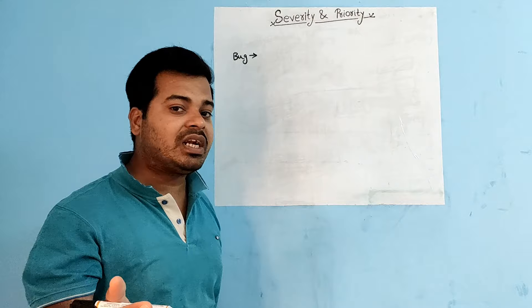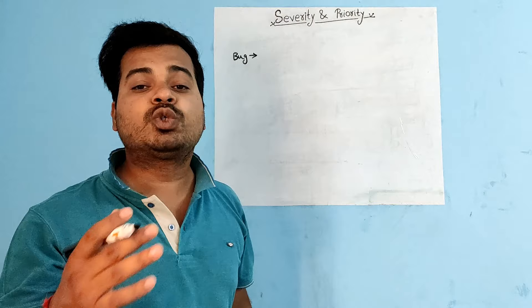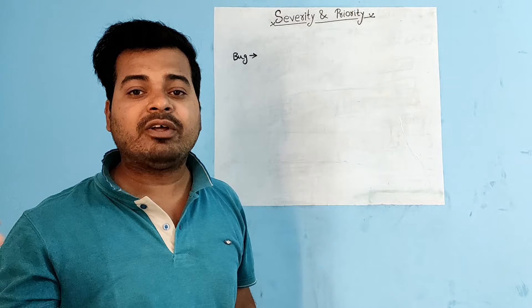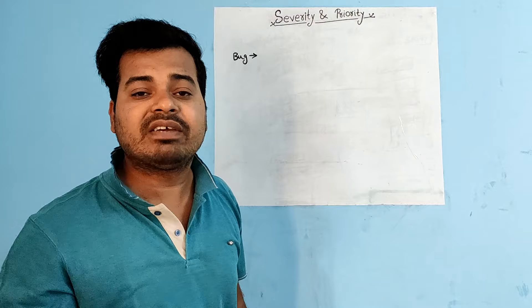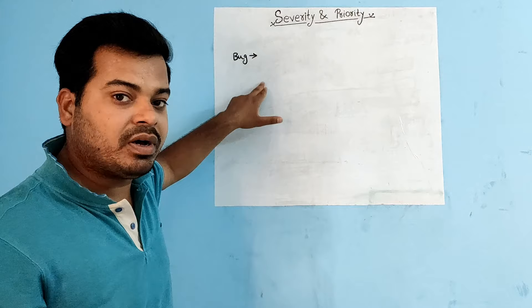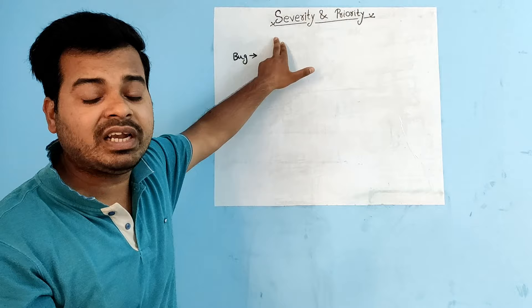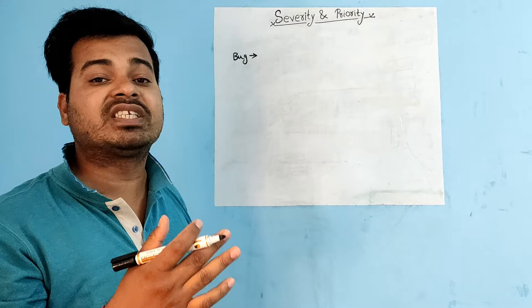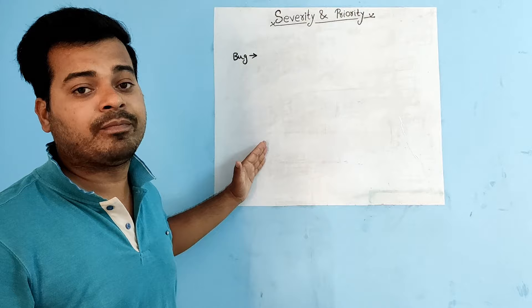Now let's talk about what priority means. How soon you want the developer to fix that bug — that is called priority. It is the importance given to the bug to fix it. If a bug's priority is high, you are trying to convince the development team to fix it first before proceeding to other lower-priority bugs.